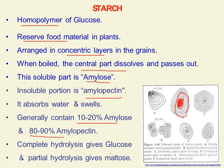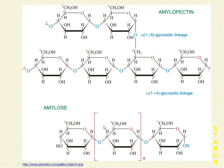On complete hydrolysis, starch gives glucose. On partial hydrolysis, it gives maltose and dextrins. Dextrins are small molecules of three or more glucose units obtained after partial hydrolysis. Complete hydrolysis yields glucose because starch is entirely made of glucose; partial hydrolysis yields maltose as well as dextrins.